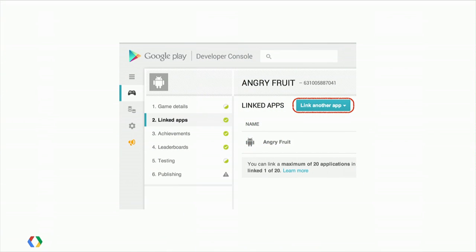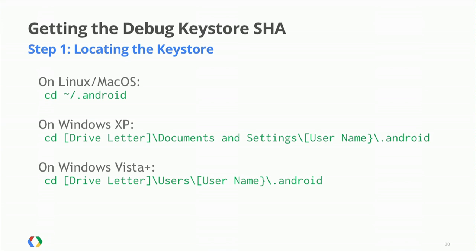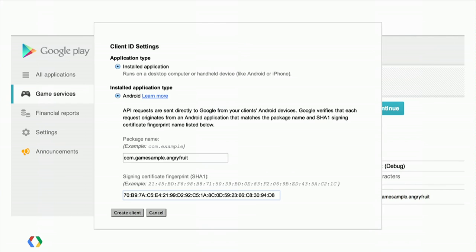You really shouldn't use release keys in development because you should protect that keystore — it's your digital identity on Google Play. So how do we make it work with the debug key? Simply go and link another app. The other app has the same package name, and we end up with a blank SHA-1 value since we didn't upload that APK. You should share the same debug keystore across your developers, because we only allow a limited number of client IDs per game. Then get the SHA fingerprint using Key Tool, dump it into the new client, and all your developers can develop against Play Services.